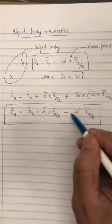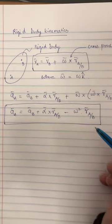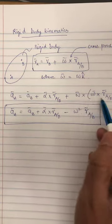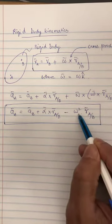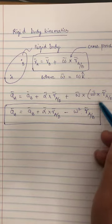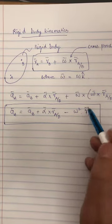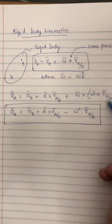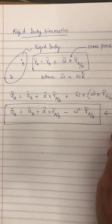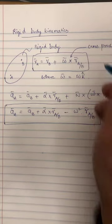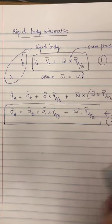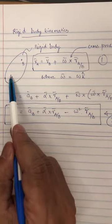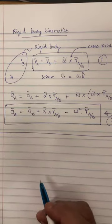These two terms are equivalent: omega cross omega cross R and minus omega squared R_A with respect to B. The first involves taking a couple of cross products where omega is a vector. In the second form, omega is a scalar. While mathematically equivalent, you should probably use the second form because it avoids taking cross products and is just easier. These are the two main equations relating the velocity and position of two points on a rigid body.